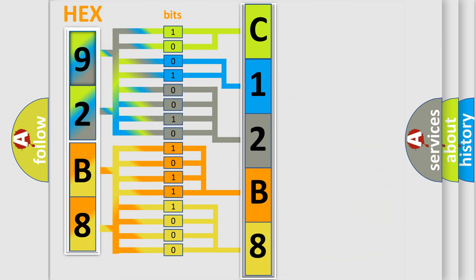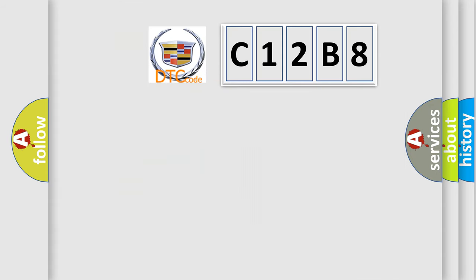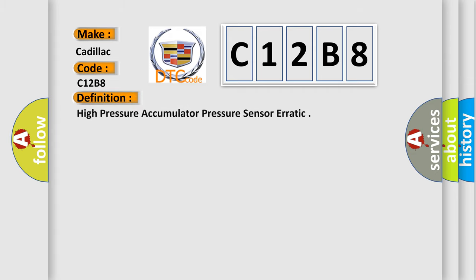We now know the way the diagnostic tool translates received information into a more comprehensible format. The number itself does not make sense if we cannot assign meaning to what it actually expresses. So, what does the diagnostic trouble code C12B8 interpret specifically for Cadillac car manufacturers? The basic definition is: High pressure accumulator pressure sensor erratic.